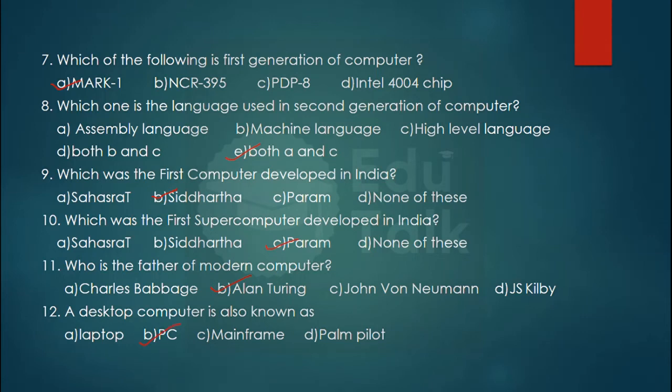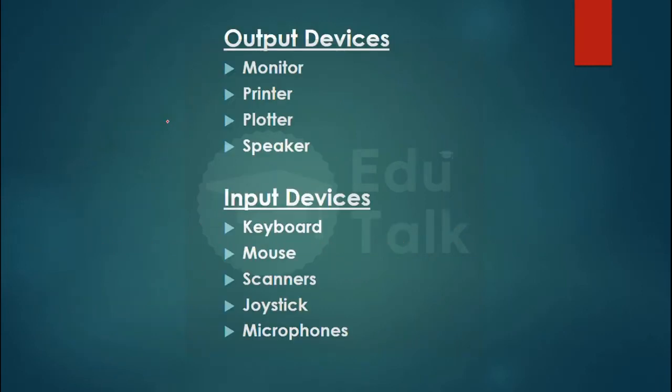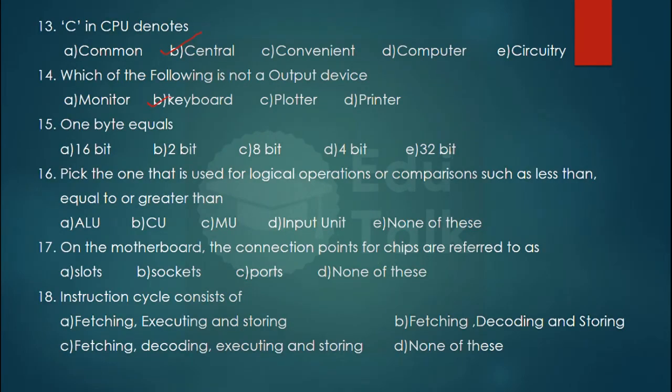Next question: C in CPU denotes central processing unit. C for central, the answer is option B, central. Which of the following is not an output device? Output devices: monitor, printer, plotter, speaker. Input devices: keyboard, mouse, scanner, joystick, microphone. The answer is keyboard.